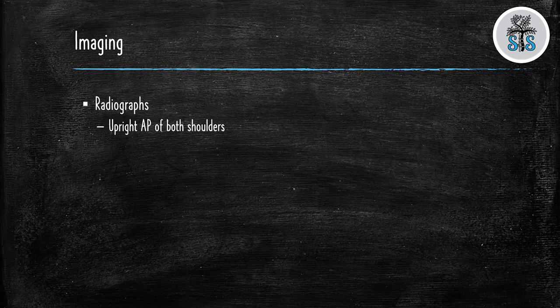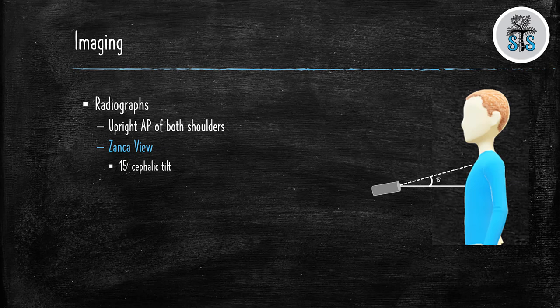There's also a view called the Zanka view. This is when there's a 15-degree cephalic tilt to the radiographic machine, and this view can be helpful to determine superior and inferior displacement of the fracture, and if there's any intra-articular involvement into the AC joint. Knowing different views and their names is pretty high yield — I would especially remember this one as AC joint pathology and clavicle fractures are quite common. An AP chest will get x-rays of the clavicles bilaterally, which are always good to compare normal anatomy to the fracture pattern.